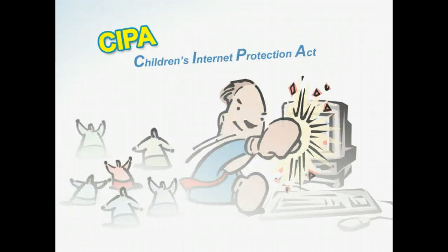Using the Internet as a teaching tool is becoming more common in classrooms today. But the Internet is full of uncensored content that is inappropriate for children and the classroom environment. Congress created a federal law for schools and libraries in 2000 to regulate the amount of offensive material accessible by students on the Internet. This law is called CIPA, the Children's Internet Protection Act.